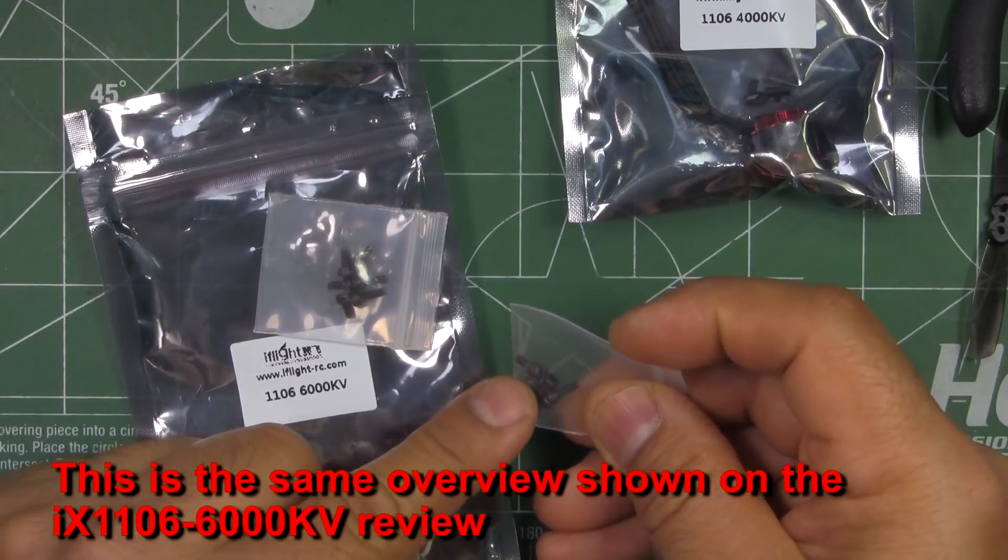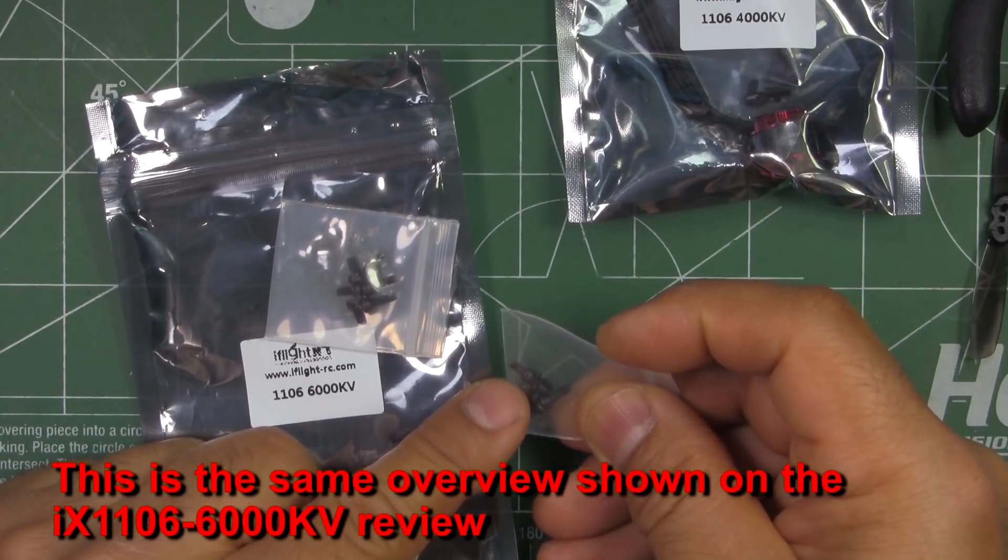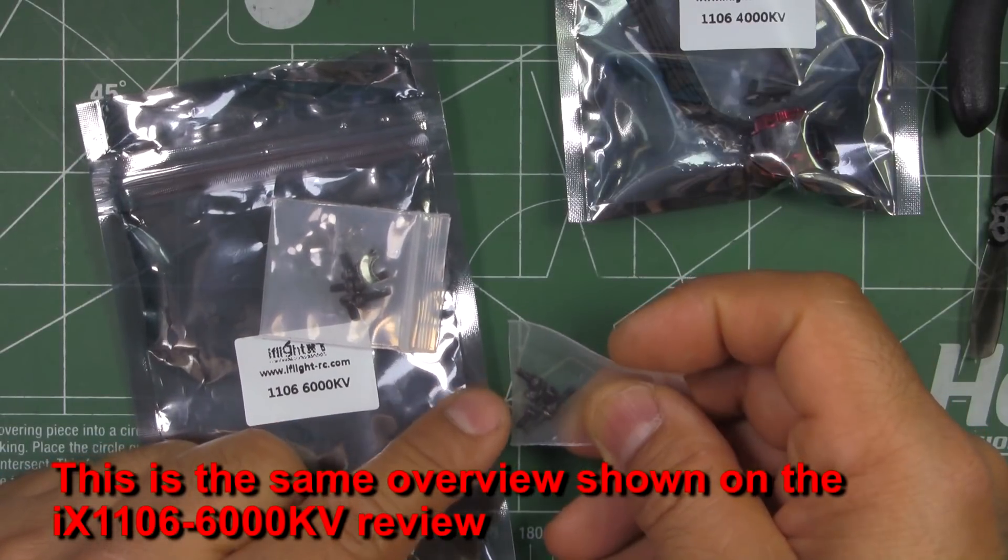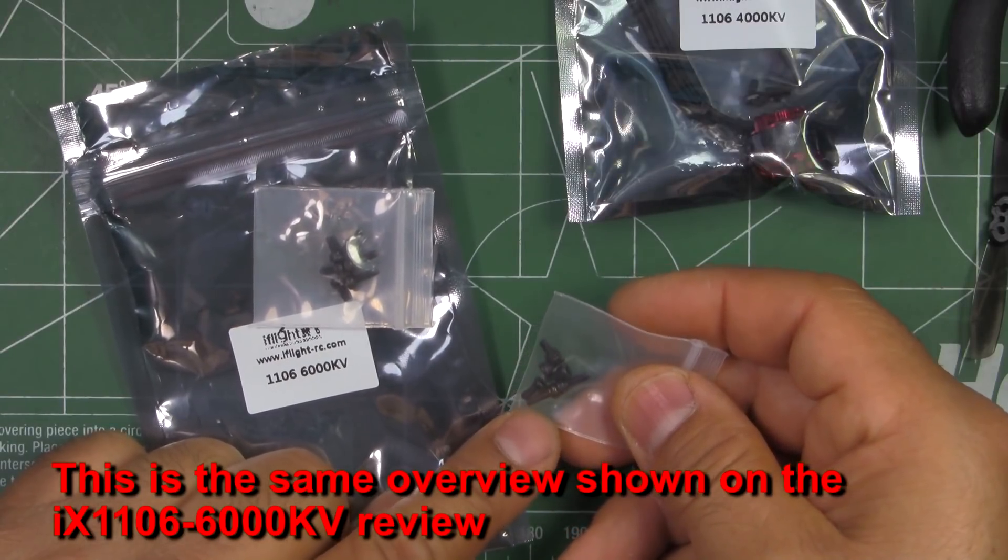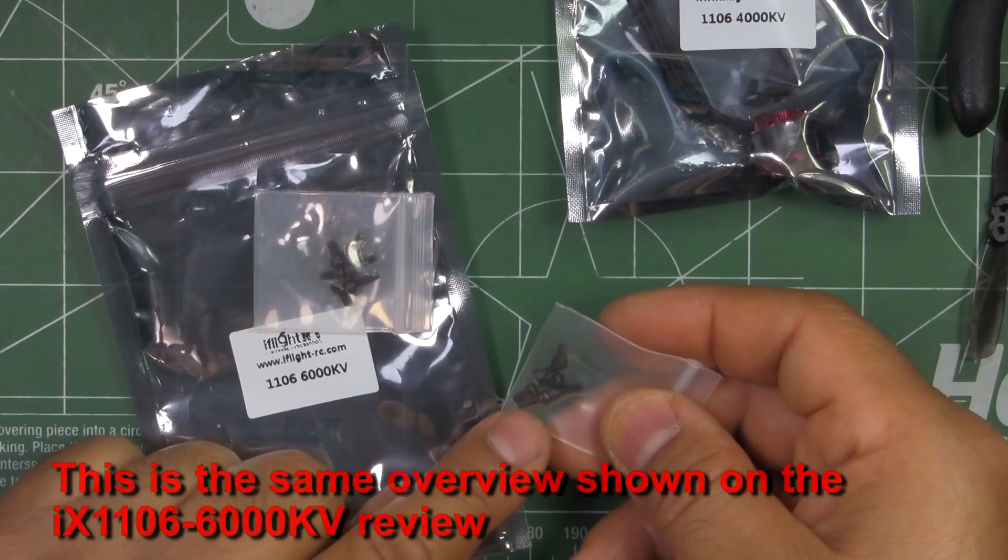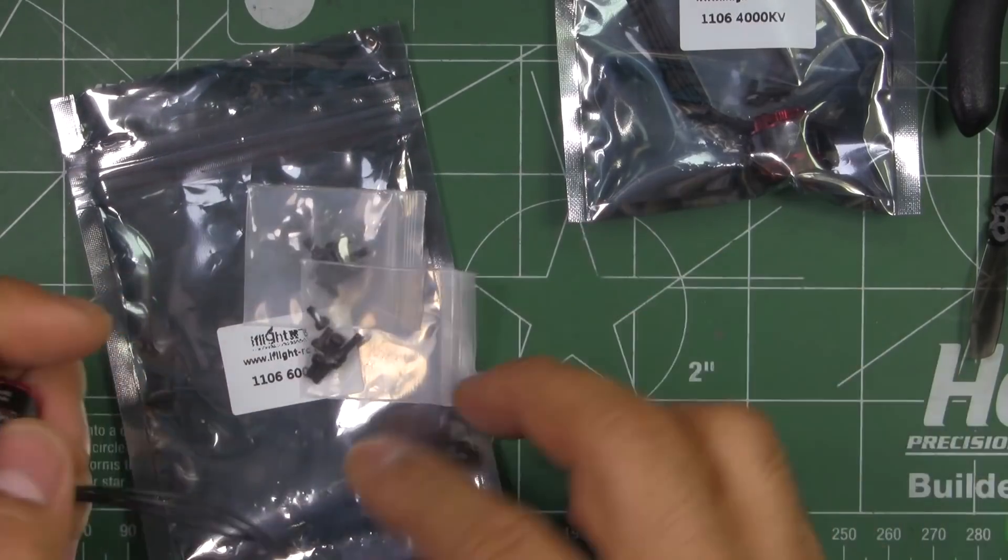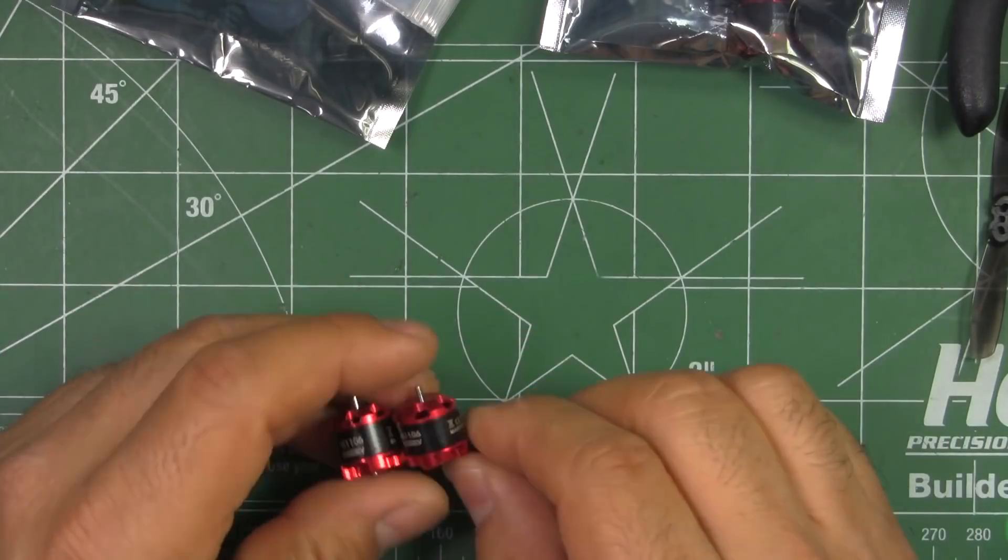Those are pretty small, looks like they are M2 by 5, and two prop M2 screws, look like M2 by 8. Anyway, those are pretty standard.